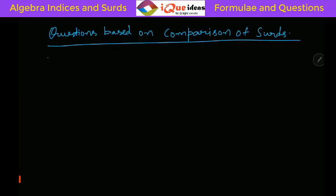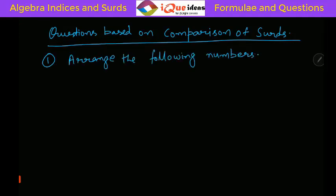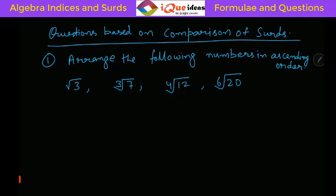Let us take up the first question. It says arrange the following numbers: root 3, cube root of 7, fourth root of 12, and sixth root of 20 in ascending order. Let us give them names: root 3 is A, cube root of 7 is B, fourth root of 12 is C, and sixth root of 20 is D. So we have to arrange A, B, C, D in ascending order.